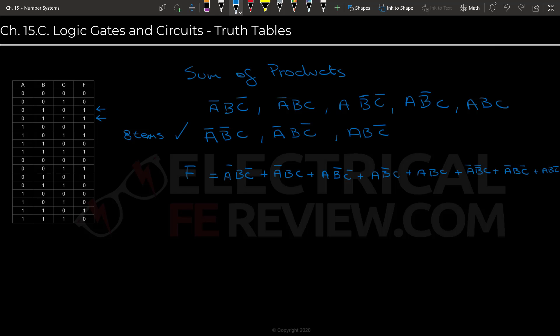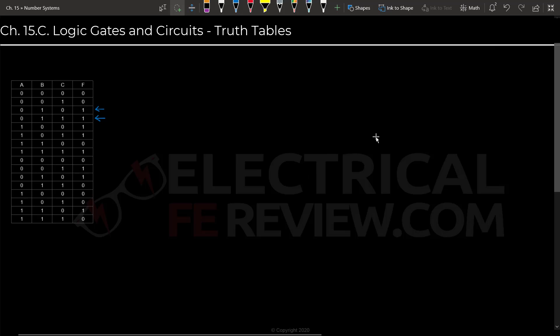So later on, we're going to go over what is called K-maps. They are really great for simplifying these functions. A function that has eight terms just like this one can reduce down to something very, very simple. So I'll go over that in another video. So that is pretty much everything there is to talk about truth tables. I hope it was helpful.